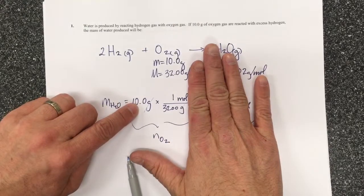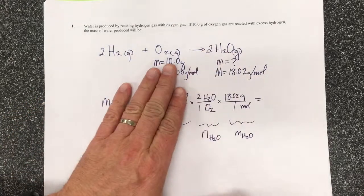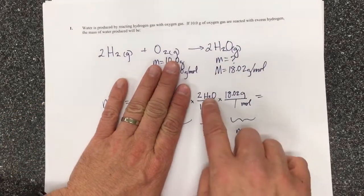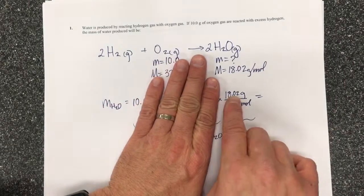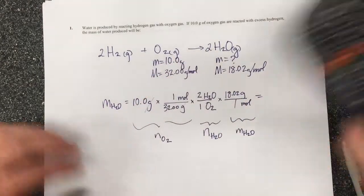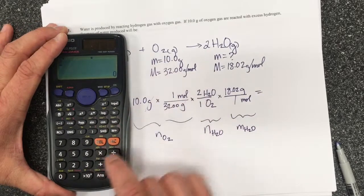I started with the known amount of oxygen, converted it to mole, then changed the moles of oxygen to moles of water, and then changed the mole of water to mass.